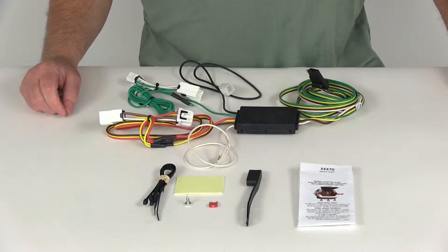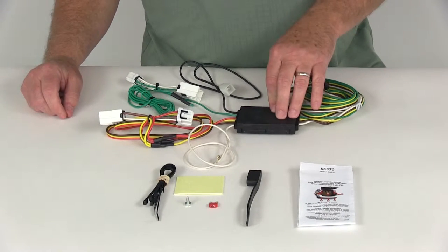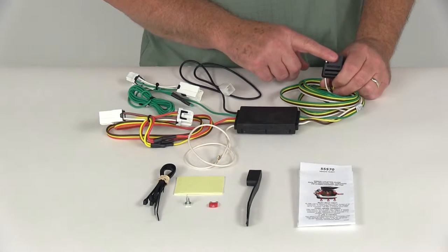Today we're going to review part number C-55570. This is the Curt T-Connector Vehicle Wiring Harness with the 4-Way Flat Trailer Connector.